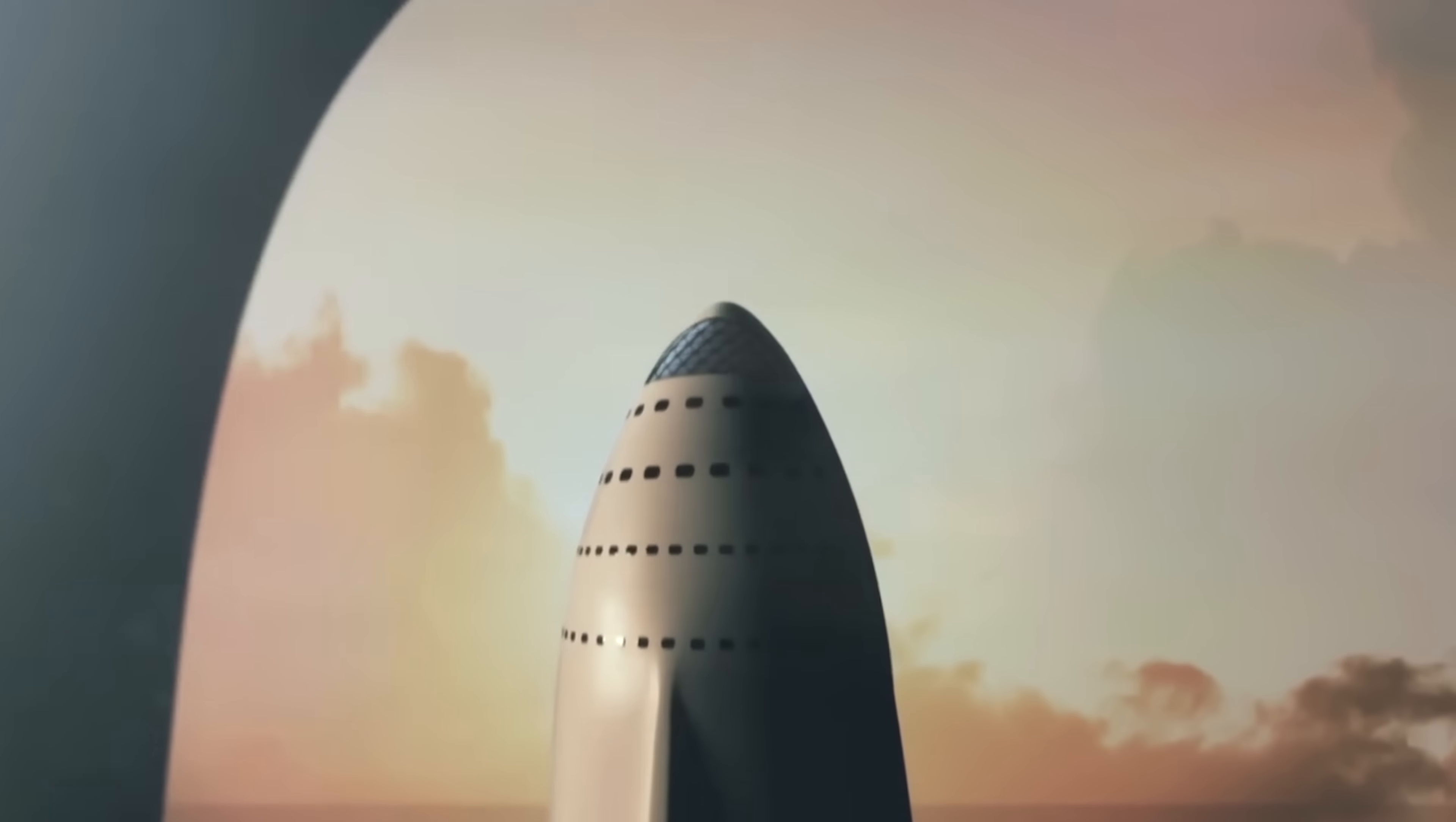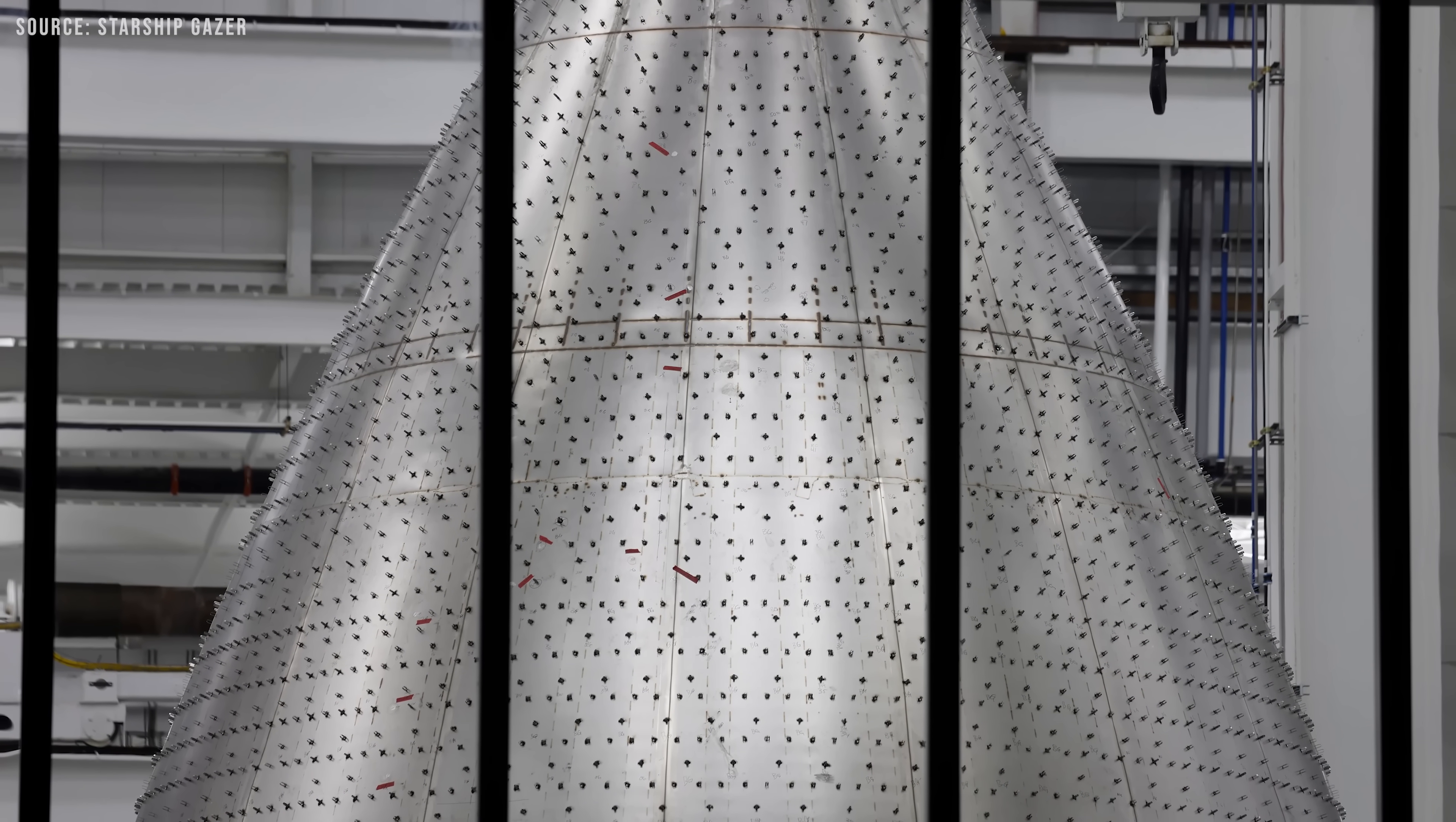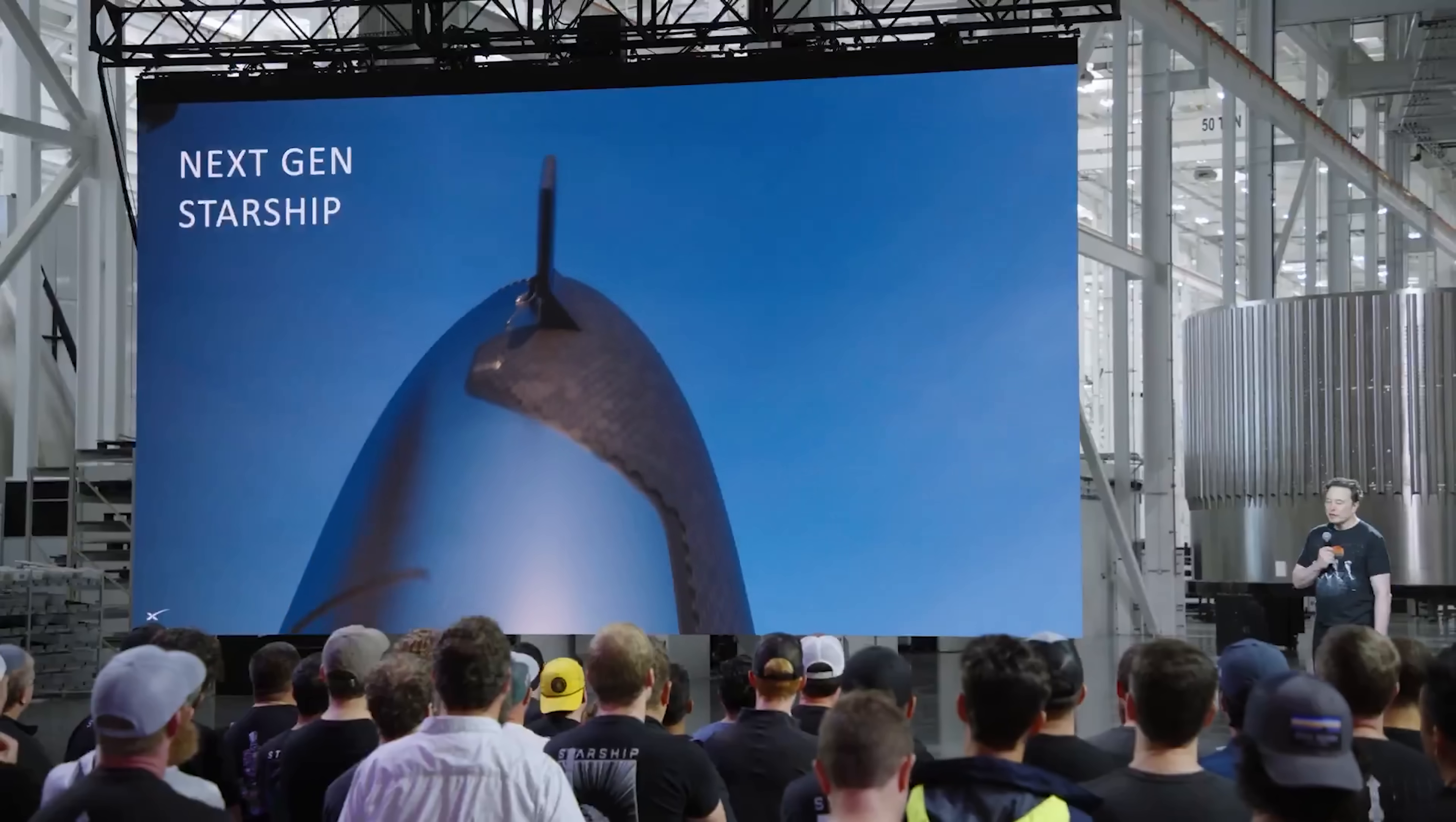The overall shape and profile of the nosecone remain mostly unchanged compared to earlier builds, which makes sense since there haven't been any major issues with the design. However, some observers say the nosecone now looks slightly slimmer and more elongated, possibly because the Version 3 Starship is expected to be a bit taller. After all, Elon has always wanted the nosecone to be pointier, just like that running joke from the movie The Dictator.